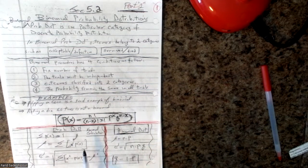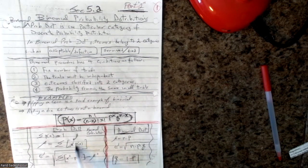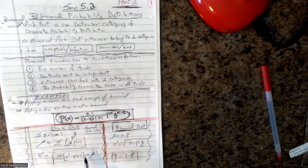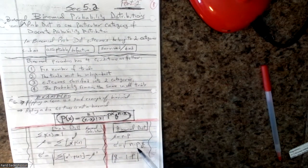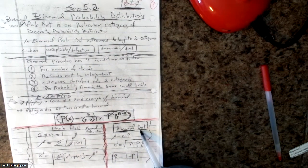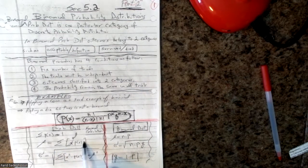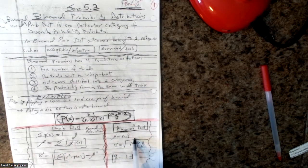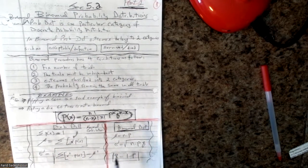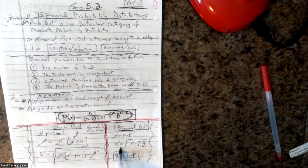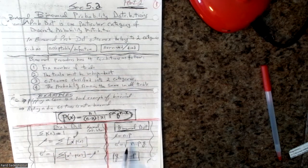For probability distribution in general, we used the standard formula before. But for the special case of a binomial, we don't have to calculate the mean through that formula — the mean can simply be n times p. Similarly, for standard deviation in the binomial case, there is a simplified formula to use.